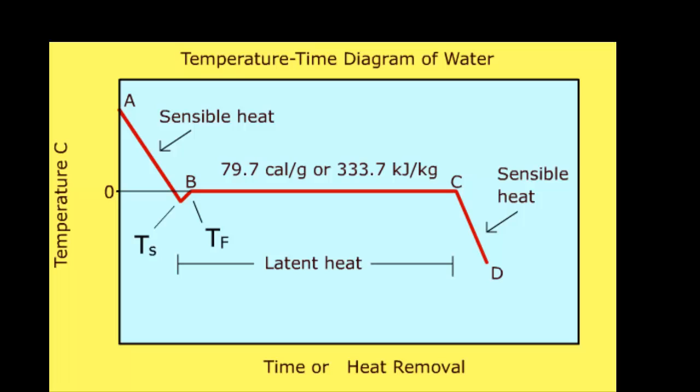Once all the water is converted into ice, additional removal of heat results in a decrease in temperature to point D. The specific heat of ice is 2.05 kilojoules per kilogram degree C.